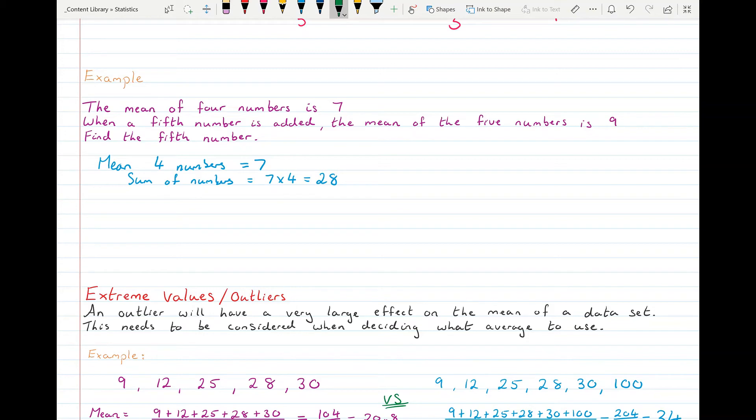The second piece of information they give us is that the mean of five numbers is nine. So then we can say that the sum of the five numbers is nine times five, which is 45. And then if we compare them, we can say that the fifth number must be 45 take away 28, which is 17. The fifth number has to be 17 because that changed the mean of the numbers from seven to nine.